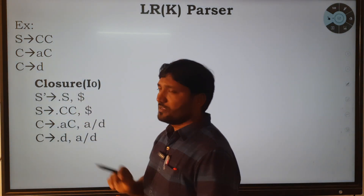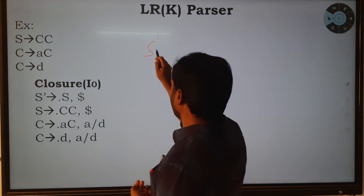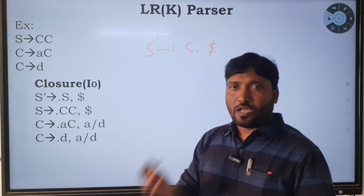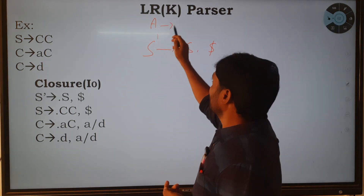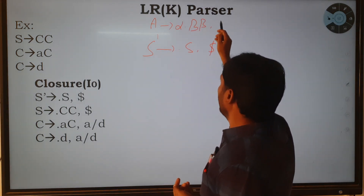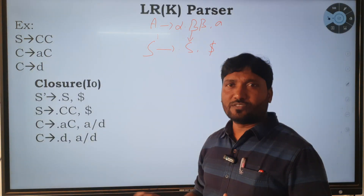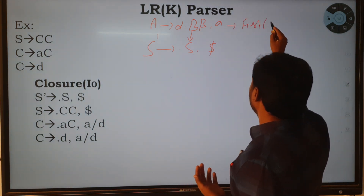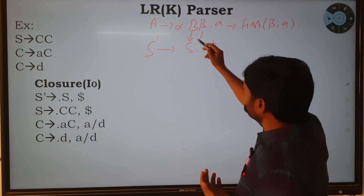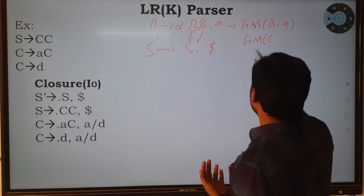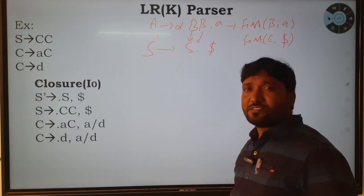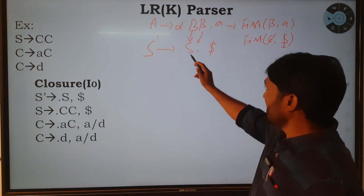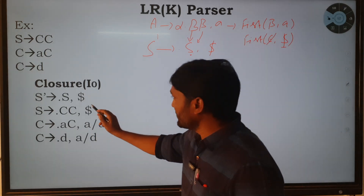To calculate the lookahead symbol, we look at the previous production: S' → •S with input string dollar. Using the formula: first(β, a) — where β is epsilon — first of epsilon with a being dollar. Whenever there is epsilon, we neglect it and consider the dollar. So the lookahead symbol for the S production is dollar.